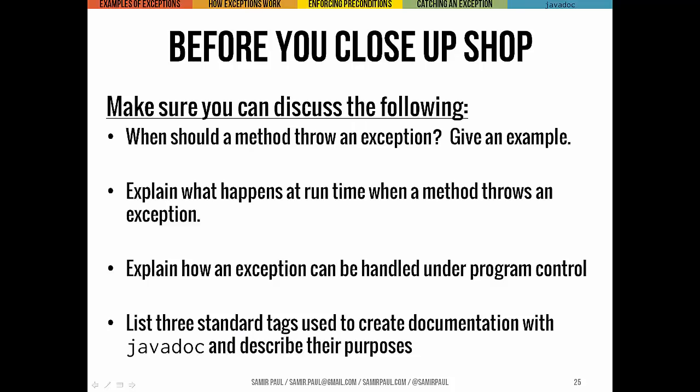Your big takeaways for the day: think about when a method should throw an exception. Think about what happens at runtime when a method throws an exception — we're talking about tracing through the call stack. How does that exception get handled, whether through the call stack looking for a try-catch statement and so on? How can you use a try-catch statement to control what happens when an exception runs? And remember those three basic tags that you use in the JavaDoc comments to indicate parameters, exceptions, and return values. That's all for today.